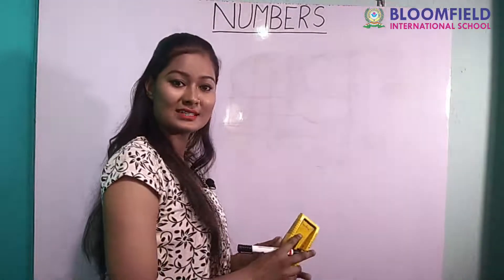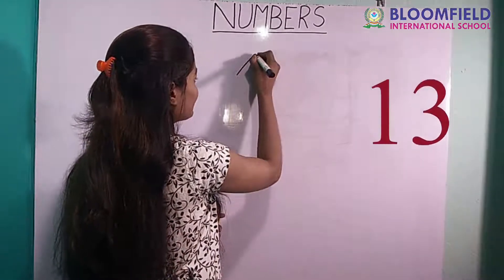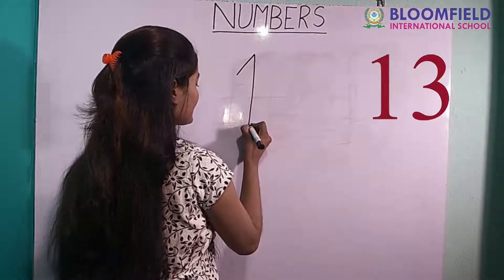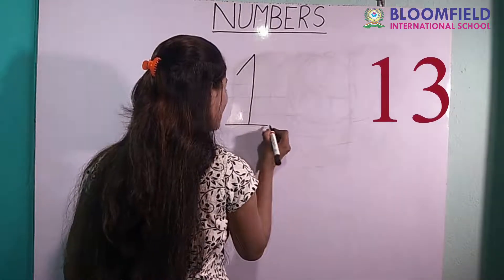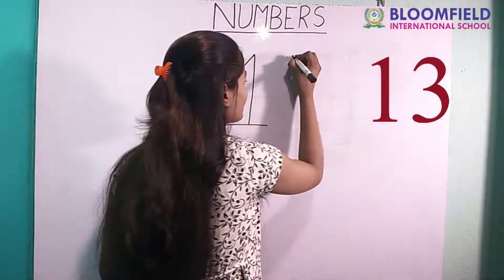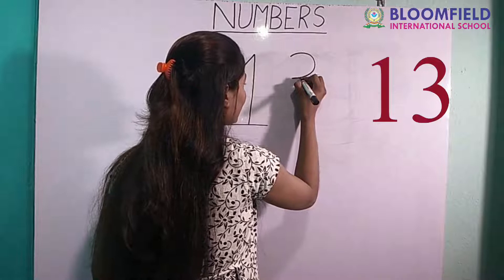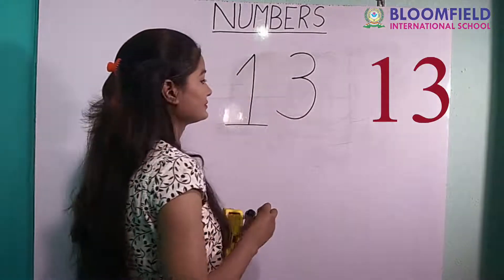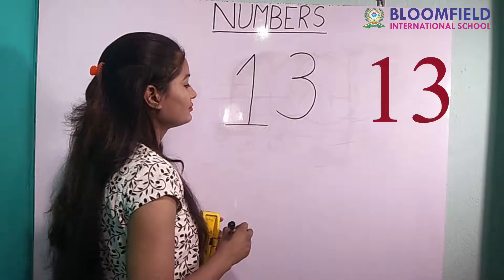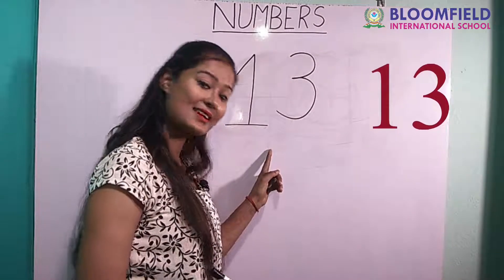Next: slanting line. One, standing line, small slipping line. Good. Small curve, and again curve. One three. Thirteen.